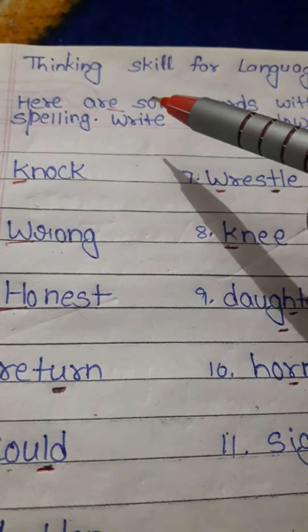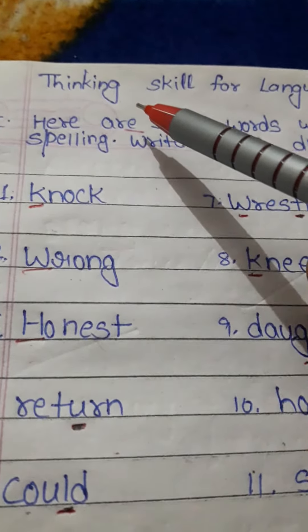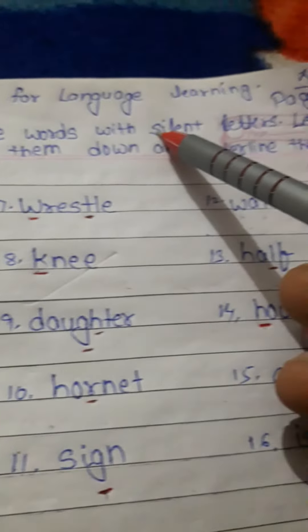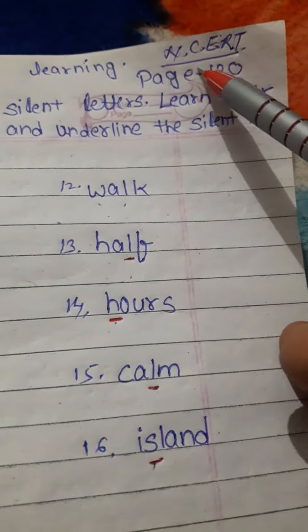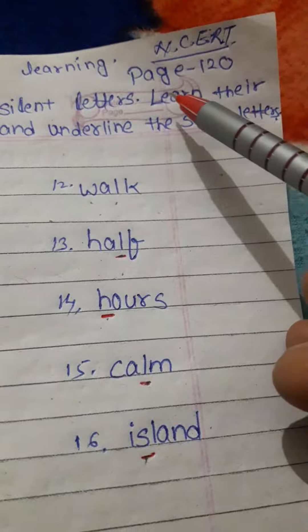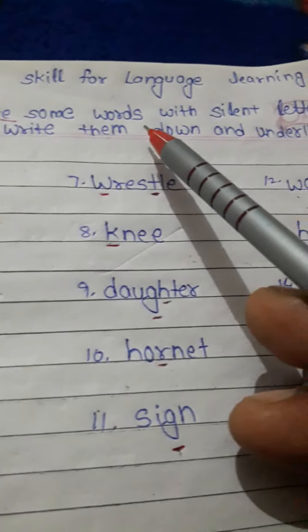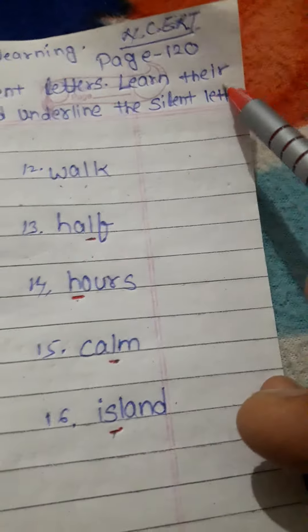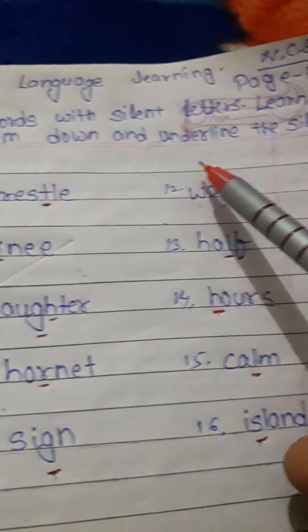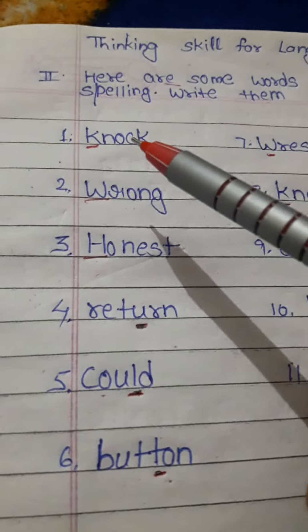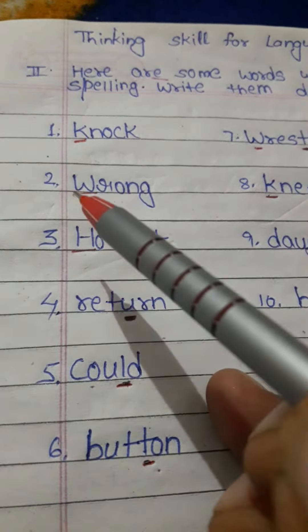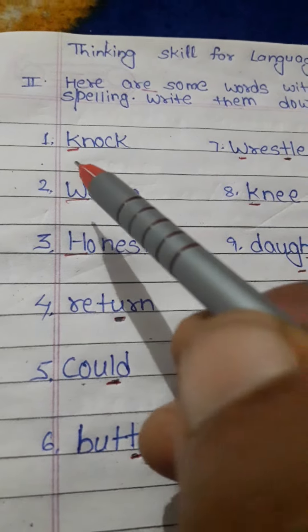Welcome to this Thinking Skills session. Thinking Skills for Language Learning, belonging to NCRT Book of Class 9th, Page No. 120. Here are some words with silent letters. Learn their spelling, write them down, and underline the silent letters. For your simplicity, silent letters have been underlined with red color.